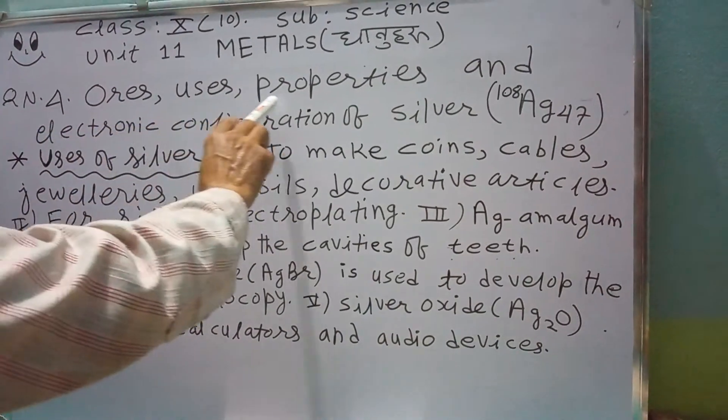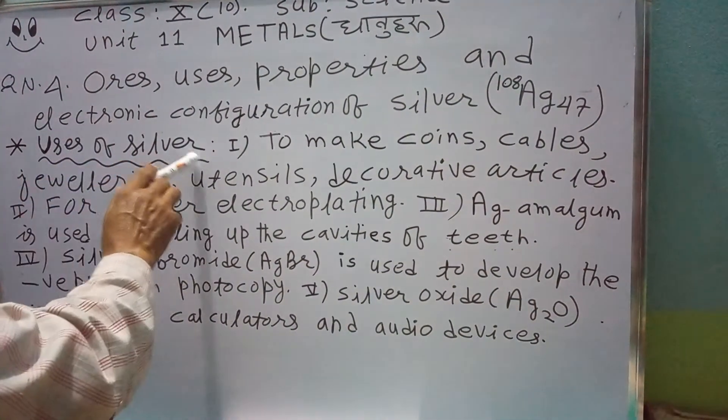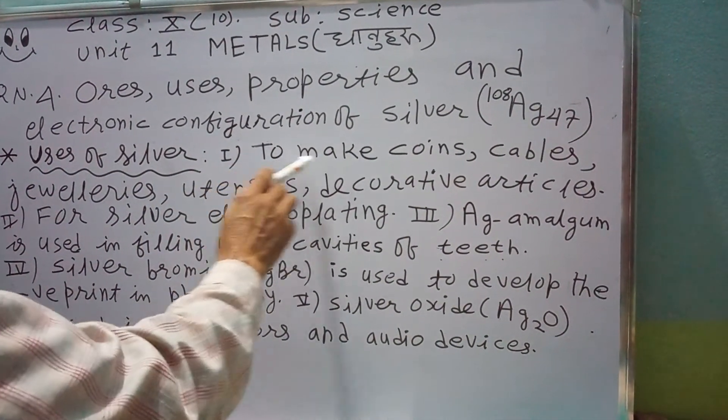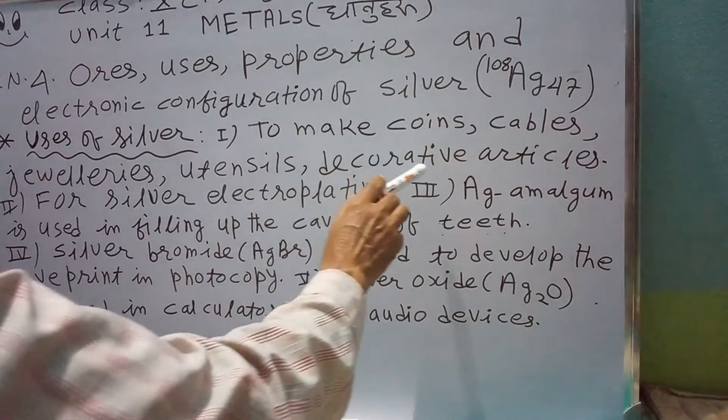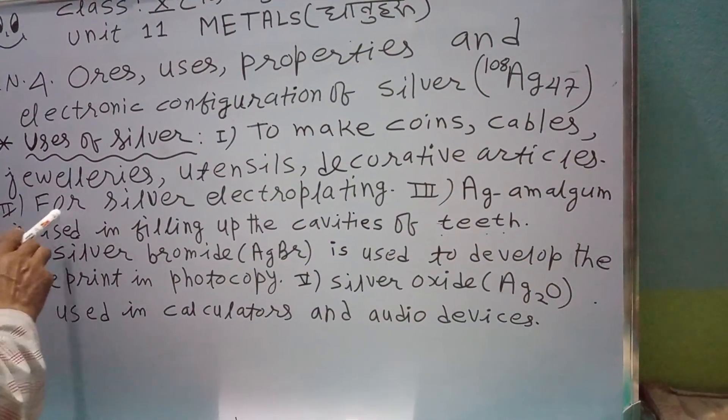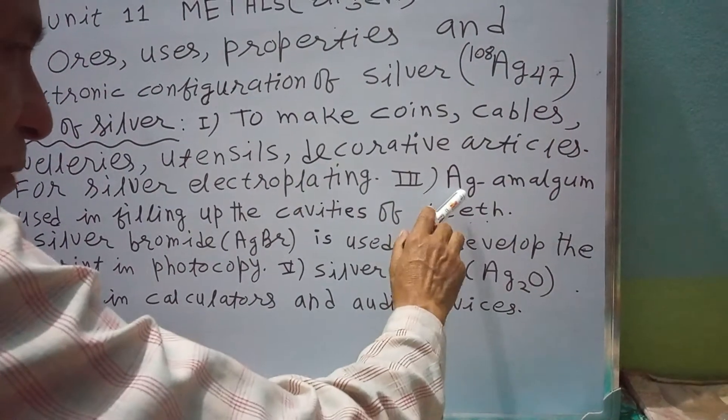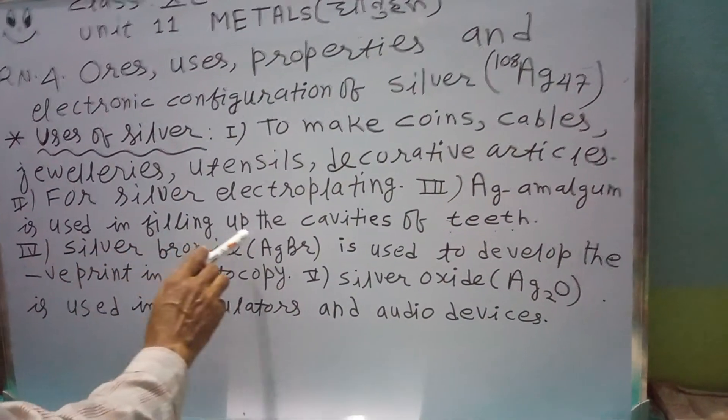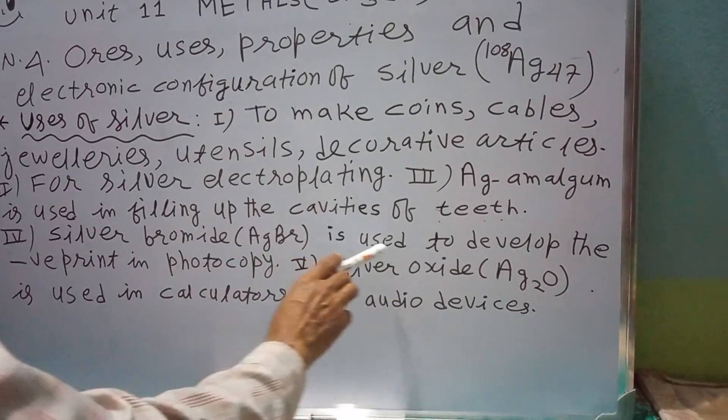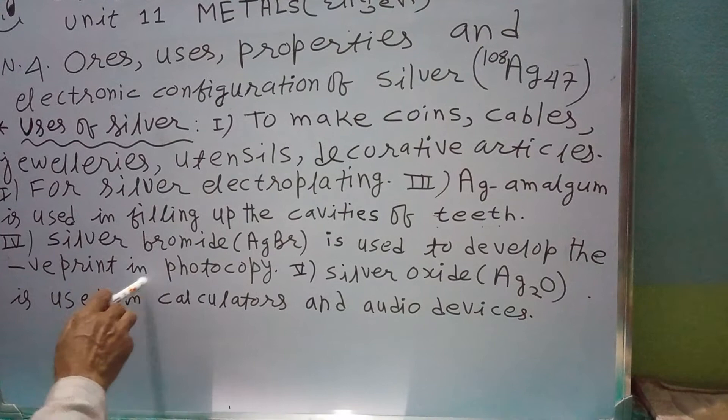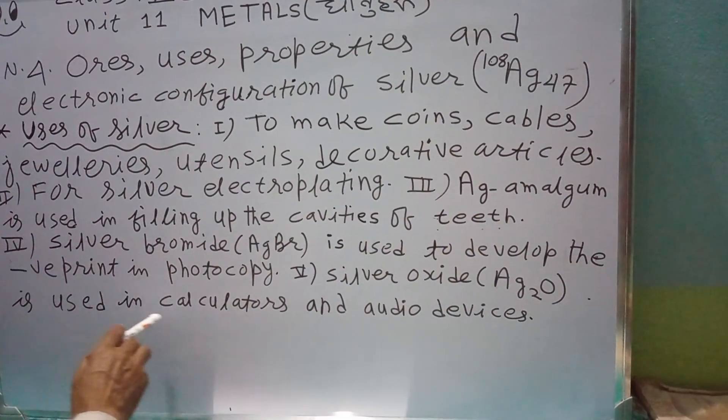Question number 4: Ores, usage, properties and electronic configuration of silver. Number 3, usage of silver: Number 1, silver is used to make coins, cables or wires, jewelries, utensils, decorative articles, etc. Number 2, for silver electroplating. Number 3, silver amalgam is used in filling of the cavities of teeth. Number 4, silver bromide AgBr is used to develop the negative print in photocopy. Number 5, silver oxide Ag₂O is used in calculators and audio devices.